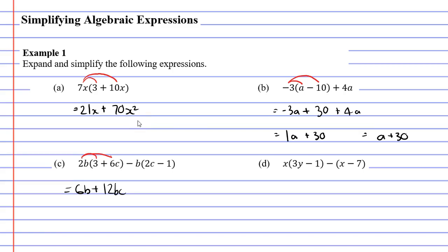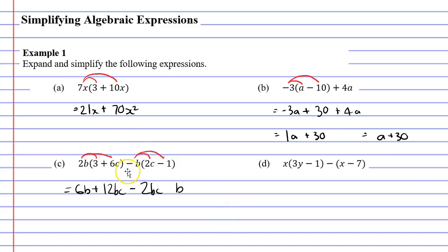Let's now look at the second set of brackets. We've got minus B times 2C and minus B times minus 1. We need to remember that this is not just B — it's minus B. So if I have minus B and I times it by 2C, we've only got one number here which is the 2, and we also had a B and a C, so I'm going to write it as 2BC with a minus sign at the front. Next, I'm doing minus B times minus 1. B times 1 is just B, but because I had these two minus signs, I end up with the plus symbol, so we get plus B.